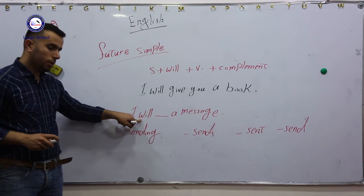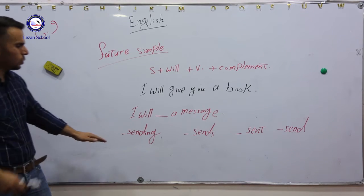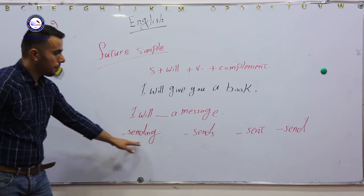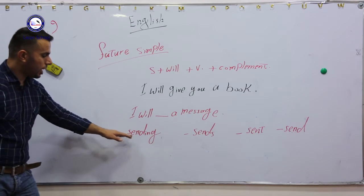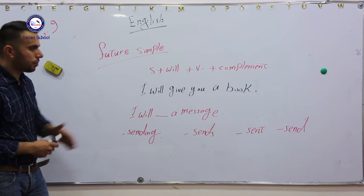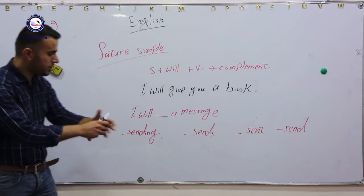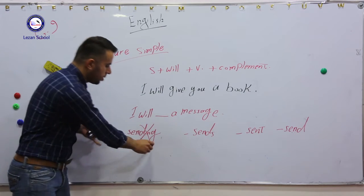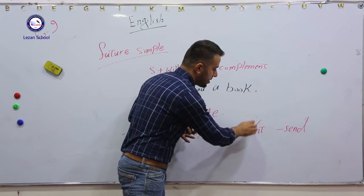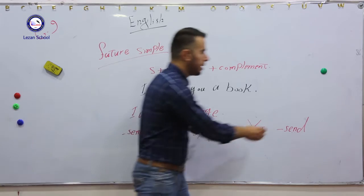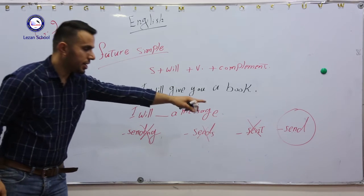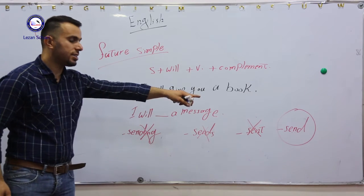In the exam, I'll give you a sentence with subject plus will, and I will ask you to choose or to fill in the gap. Shall we use verb ing after will? You have to have a look at the rule. We have to have verb without ing, without s, and without ed. It should not be in the past. Sent is the past of send. It should be in present form. So you have to circle the last one, option D. This is the correct one. This is the verb in present.